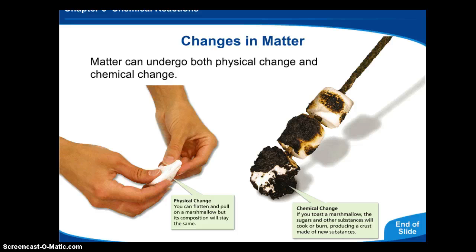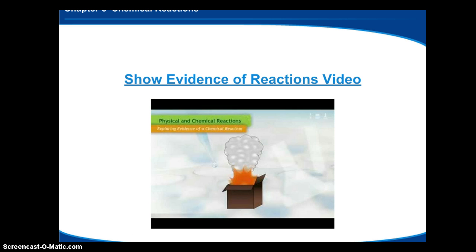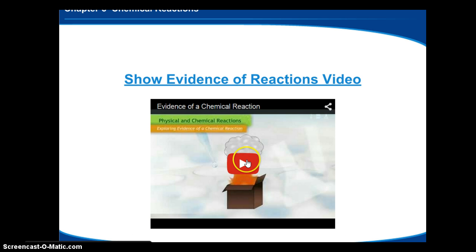The sugars and other substances would cook or burn and produce this new color and new smell and a new substance. When we have the properties of a chemical change, it's when bonds break and new bonds form. That's what creates new properties in a chemical change, and that's why we create a new substance with new properties. I'll show you a quick video.